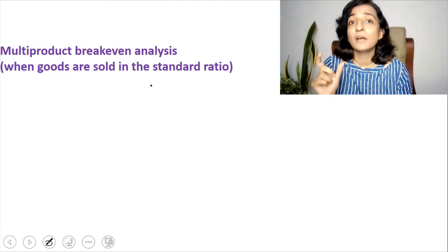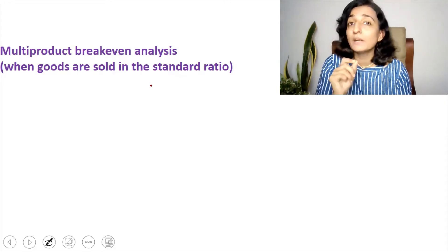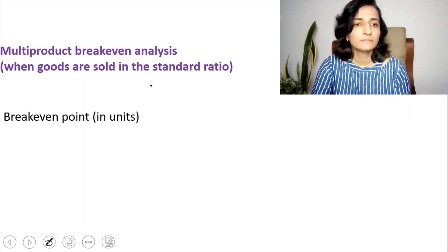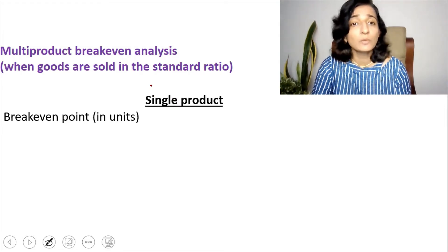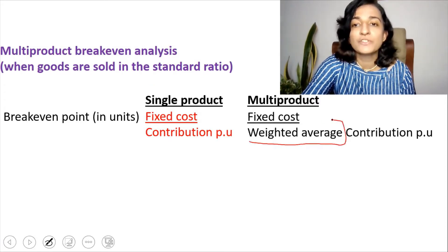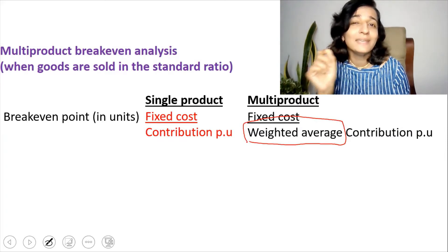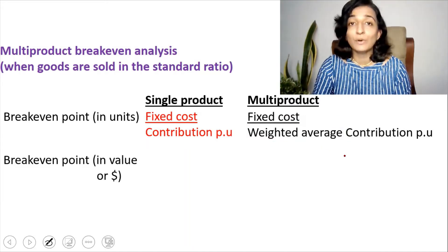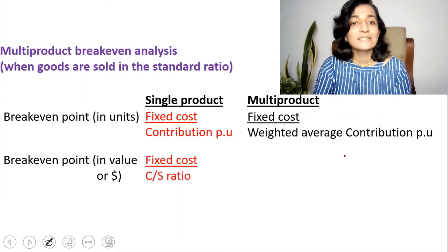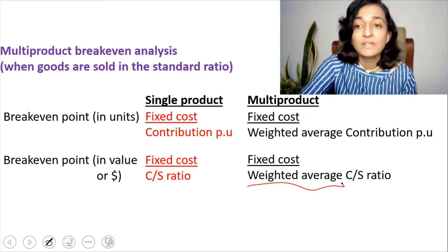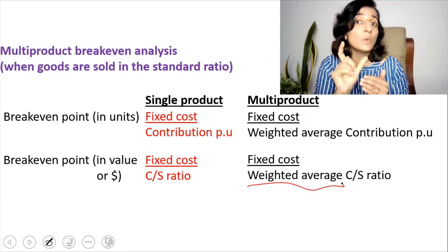We already know certain formulas for single-product break-even, and only slight modifications are needed for multi-product. Break-even point in units: for a single product it's fixed cost divided by contribution per unit; for multi-product it's fixed cost divided by weighted average contribution per unit. Break-even point in value: for single product it's fixed cost divided by C/S ratio; for multi-product it's fixed cost divided by weighted average C/S ratio.